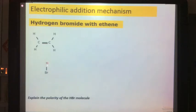HBr is actually a polar molecule because bromine has a higher electronegativity than hydrogen and so there would automatically be a dipole on this molecule.